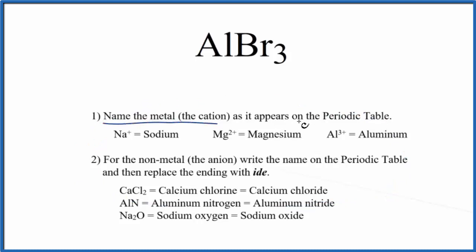First, we write the name of the metal as it appears on the periodic table. So Al, that's aluminum.